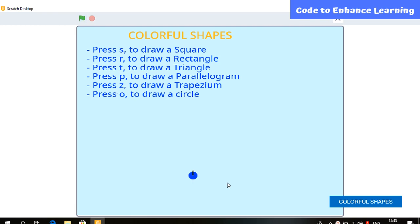Let's press R. A rectangle is formed. So like this, we can create any of these shapes by pressing corresponding keywords.